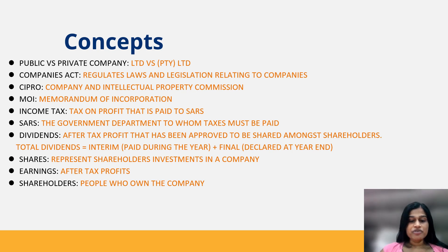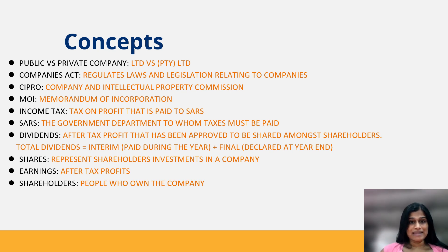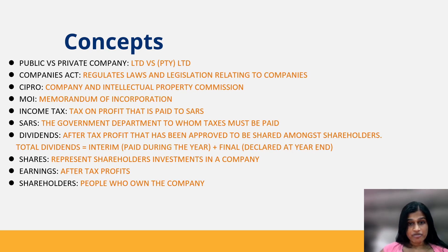Dividends is after-tax profit that has been approved to be shared amongst shareholders. Total dividends is made up of interim dividends, which are dividends paid to shareholders during the financial year, as well as final dividends declared to shareholders at the end of the financial year — these need not necessarily be paid by year end. Shares represent shareholders' investments in a company, and earnings is the terminology used to represent after-tax profit, also known as net profit in your income statement.